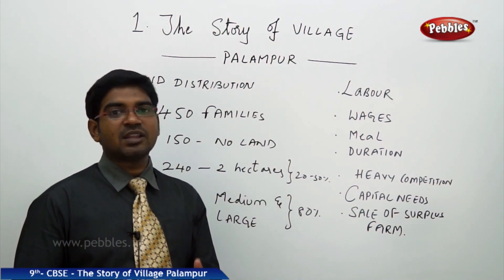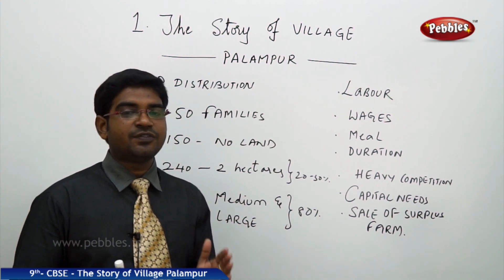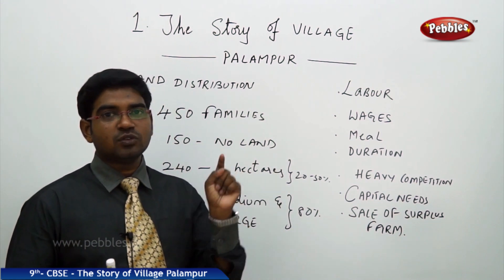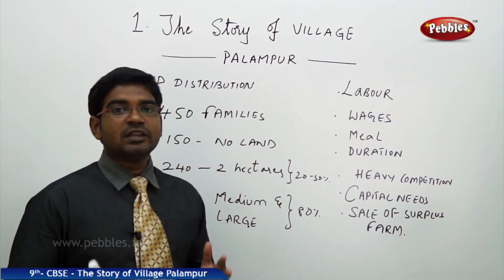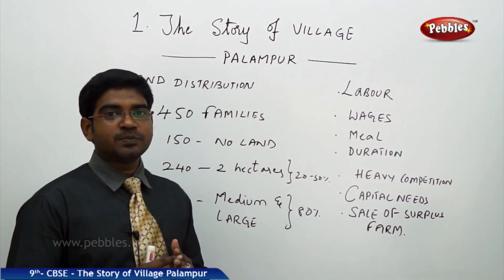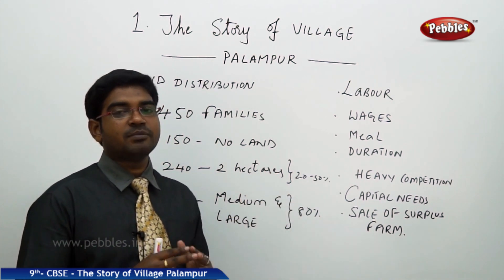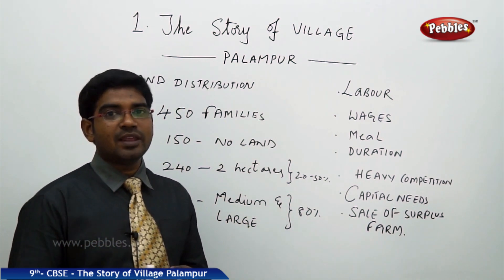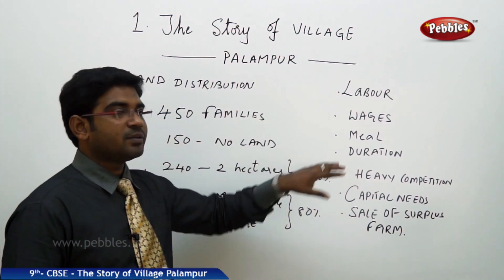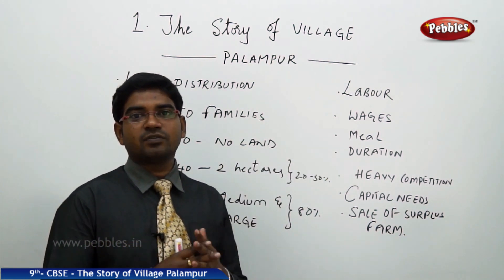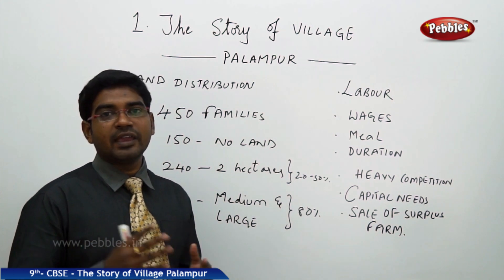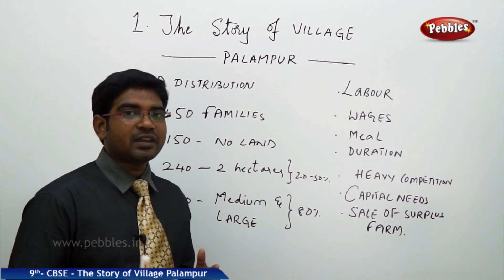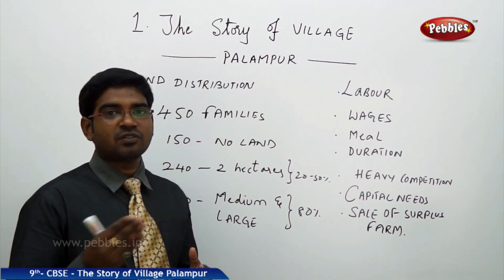Though the government has fixed wages of 50 to 60 rupees per day, workers are still paid only 35 to 40 rupees. They cannot raise objections because they are bound by various restrictions within the village, including heavy competition from other workers who have no work. If you do not get any work, you may not even get 30 to 35 rupees.